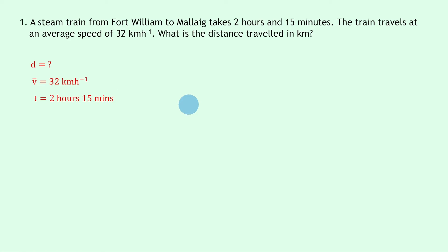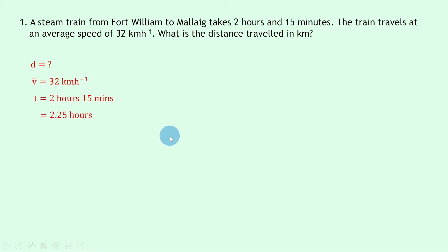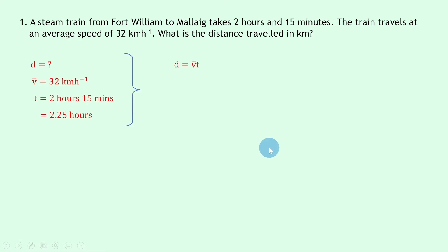We're using kilometers and hours rather than meters and seconds here. We're going to simplify the time to be in just hours: since 15 minutes is a quarter of an hour, that's the same as 0.25 hours, so our time is equal to 2.25 hours. Writing down our equation for average speed: d equals v-bar times t. Substituting in the numbers we get 32 times 2.25, which gives an answer of 72 kilometers.